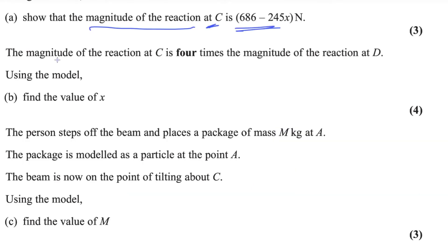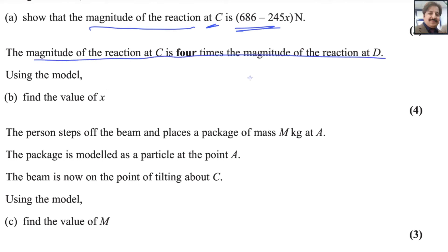For the next part, it is given that the magnitude of the reaction at C is 4 times the magnitude of the reaction at D. So Rc equals 4Rd. Using this fact, we will solve the second part.